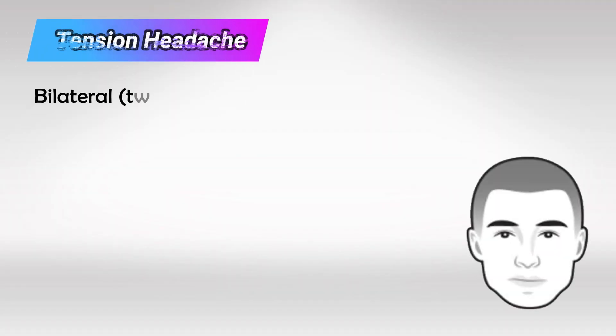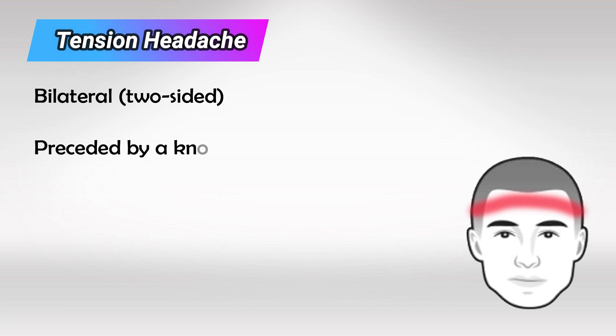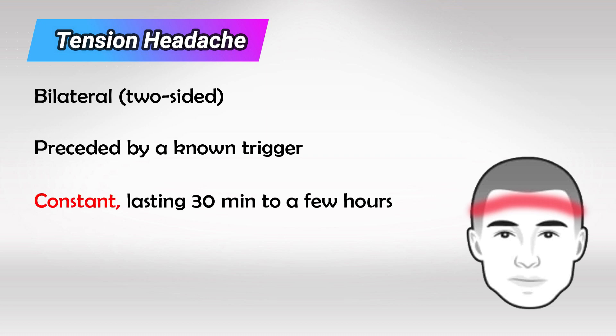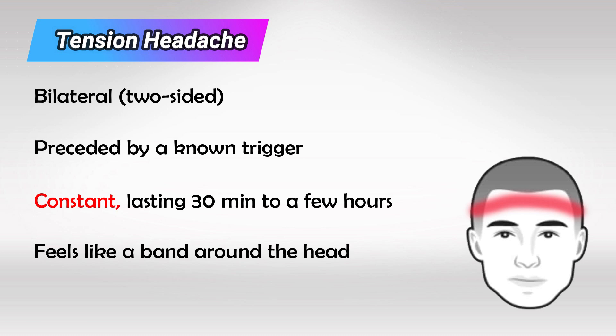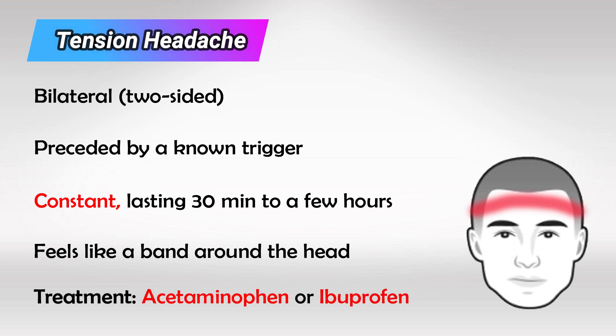The first type is the most common, and that is tension headache. This is a bilateral headache, which means occurring in both sides of the head. There is normally a known trigger, for example loud music or a certain perfume or something like this. The headache is a constant type, which means that it doesn't come and go, and the episode would last anywhere from half an hour to five hours. The patient would feel a band-like sensation around the head.